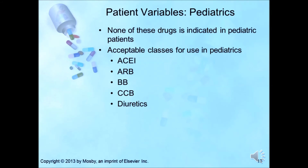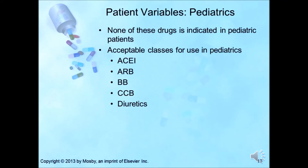None of these miscellaneous drugs are indicated in pediatric patients. Hypertension in children is defined as blood pressure above the 95th percentile for age, gender, and height. Indications for treatment include symptomatic hypertension, secondary hypertension, hypertensive target organ damage, diabetes types 1 and 2, persistent hypertension despite non-pharmacologic measures, and compelling reasons. There are guidelines by the National Heart, Lung, and Blood Institute's fourth report with specific recommendations for children. Acceptable drug classes for use in children include ACE inhibitors, ARBs, beta blockers, calcium channel blockers, and diuretics.